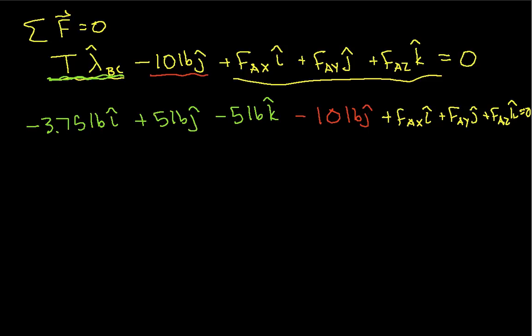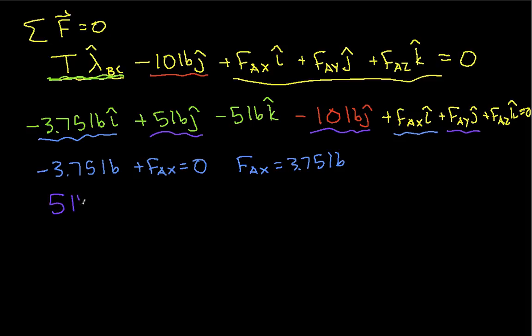So now we look at the i-hats. We have minus 3.75 pounds plus fAx is equal to 0, from which it's clear that fAx is equal to 3.75 pounds. That's good. We're making progress. In terms of the j-hats, we have 5 pounds minus 10 pounds plus fAy is equal to 0, and from this we can see that fAy is equal to 5 pounds.